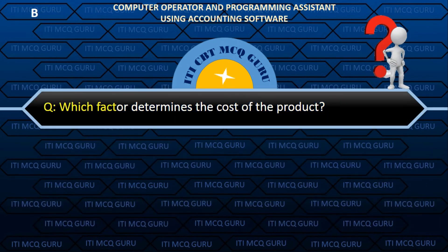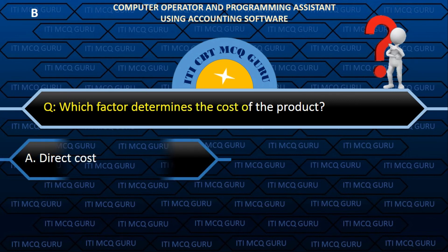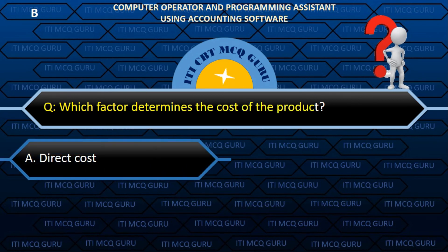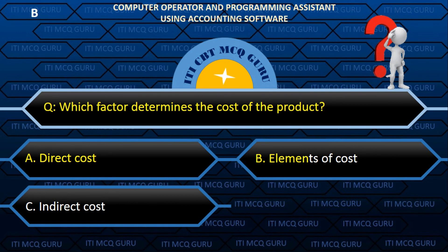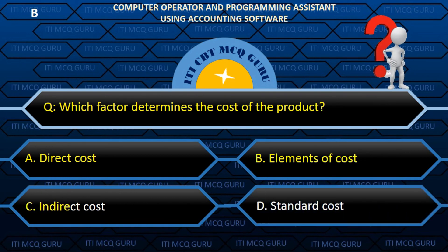Which factor determines the cost of the product? B. Elements of cost.